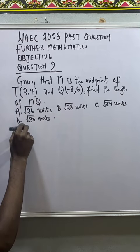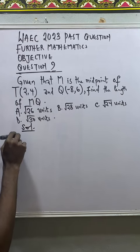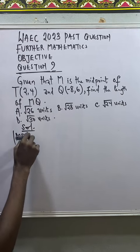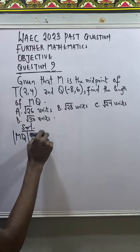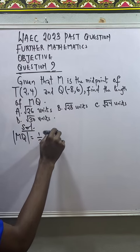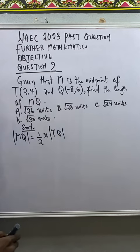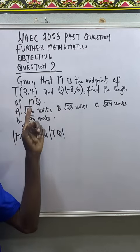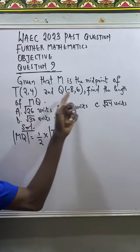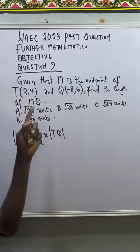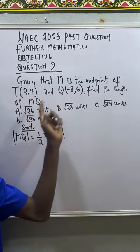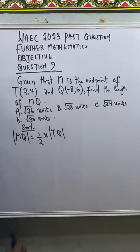So the solution: MQ will be equal to 1 over 2 times TQ. So instead of first finding the midpoint of T and Q and taking the distance formula to find the distance between M and Q, this will rather work faster.